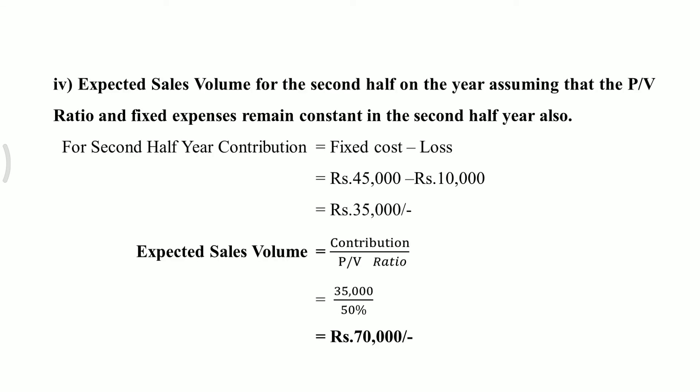The last calculation is expected sales volume for the second half of the year, assuming PV ratio and fixed expenses remain constant. Contribution for the second half year equals fixed cost minus loss: rupees 45,000 minus 10,000 gives contribution of 35,000. Expected sales volume equals contribution divided by PV ratio: 35,000 divided by 50 percent. Expected sales volume for the second half year is rupees 70,000. Thank you.